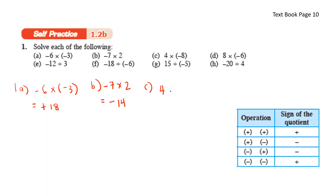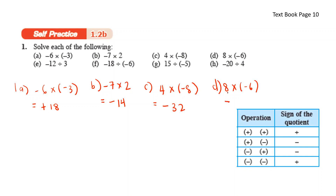4 times negative 8 — positive and negative, you get negative. So negative 4 times 8, you get 32. 8 times negative 6 — positive and negative, you get negative. So negative 8 times 6, you get negative 48.